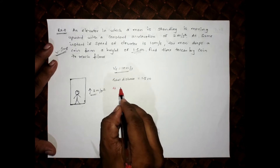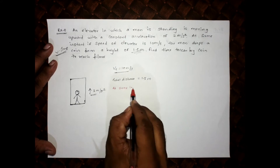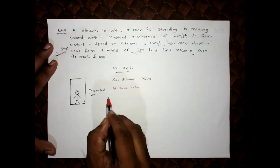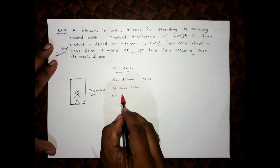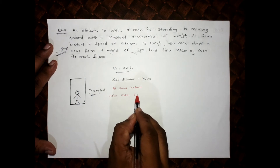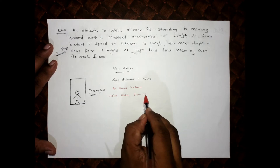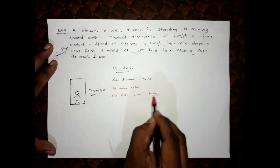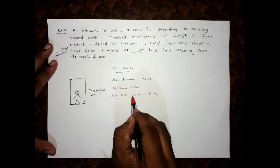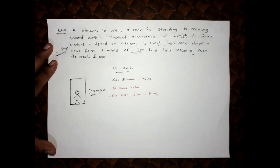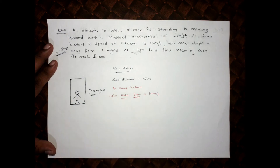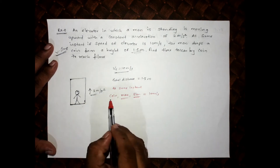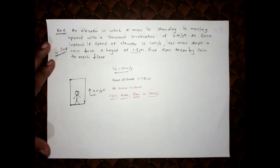At the instant the coin is dropped, the coin's speed, the man's speed, and the elevator's speed are all 10 meter per second — because everything is inside the elevator. So the coin's initial speed with respect to ground is 10 meter per second upward.